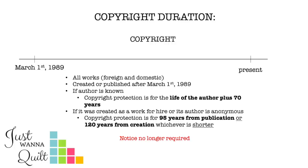This is part six: after 1989. Starting March 1, 1989, Congress passed a law that said you did not need to have notice in order to have protection on your works. So these are all works, foreign and domestic, created or first published after March 1, 1989 — they're all under copyright. The term is life of the author plus 70 years. If it's work for hire or anonymous work, it is 95 years from publication or 120 years from creation, whichever is shorter.